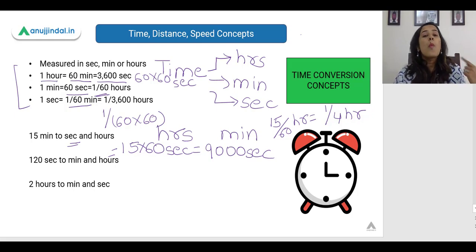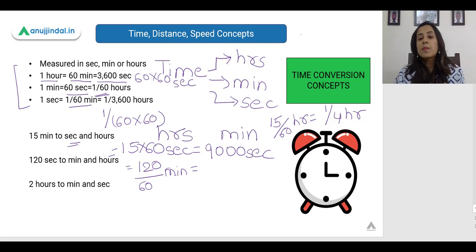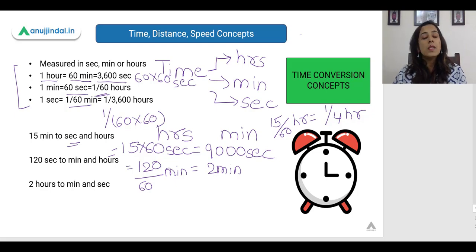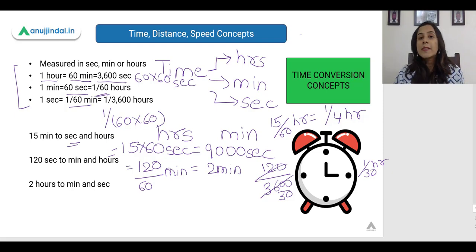Now let us convert 120 seconds to minutes and hours. To convert seconds into minutes, we divide by 60. So 120 seconds divided by 60 gives 2 minutes. If we want to convert into hours, we divide by 3600, and we get 1/30th of an hour. So 120 seconds is nothing but 1/30th hour.